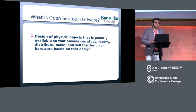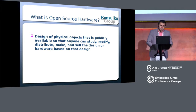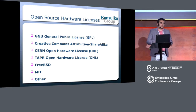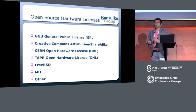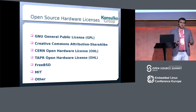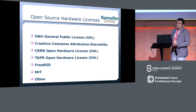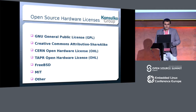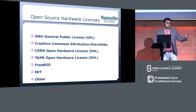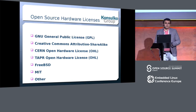The open source hardware movement is getting some traction in recent years. When you have a physical project you'd like to share in terms of schematics, in order to make it really open source hardware you need to pick up a license — it's the same workflow as with open source software. You can use some software licenses, but I recommend picking a license that covers hardware better. Have a look at other open source hardware projects, read the licenses, and pick the one that suits you best.